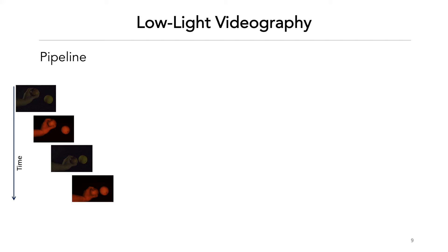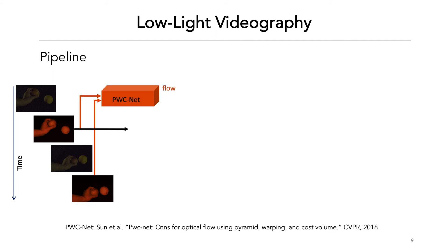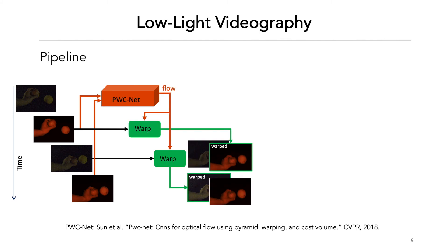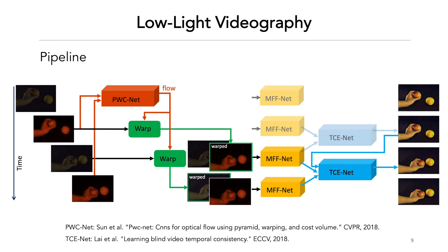To generalize low-light photography to videography, the input becomes a sequence of flash and no-flash image pairs recorded by the same camera. We present a pipeline for robust video reconstruction. We first compute the optical flow between two consecutive guide signals. We then forward-warp the flashed frame by one half of the flow field to pair with the no-flash frame, and forward-warp the no-flash frame by the other half of the flow field to pair with the next flashed frame. This process ensures robust alignment in the dark. We then apply a Mesopic Flash Fusion Network to each pair, and a temporal enhancement network to alleviate flickering artifacts. Such a pipeline preserves the original frame rate.